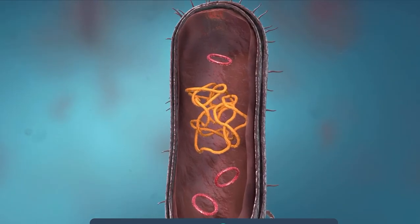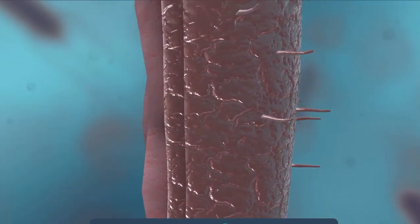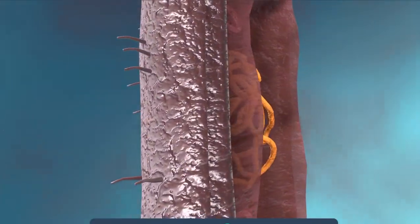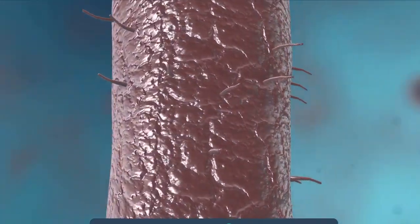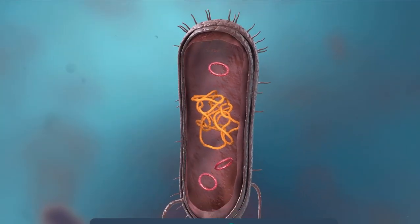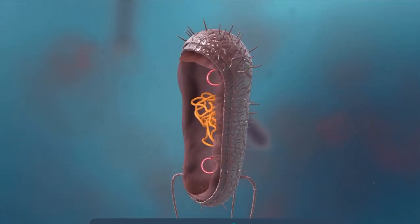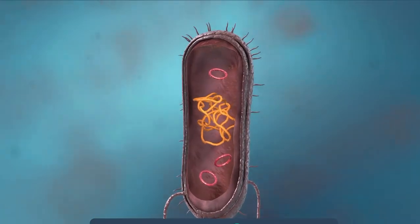Outside the cell wall is the capsule, which is made mainly from polysaccharides. It protects the cell and is responsible for the diseases caused by some bacteria in the host organism. Some bacteria are capable of active locomotion through the use of their flagella.